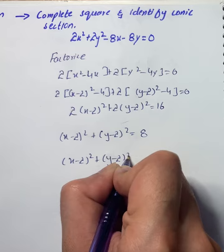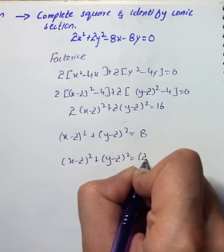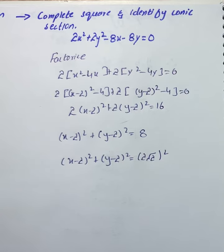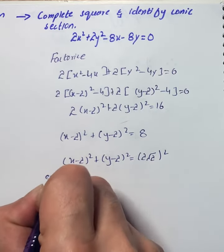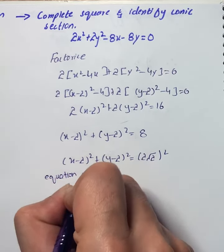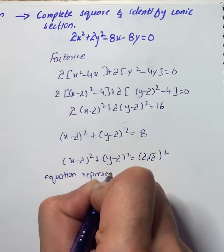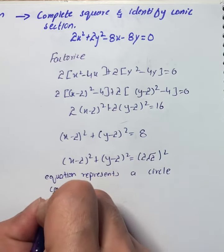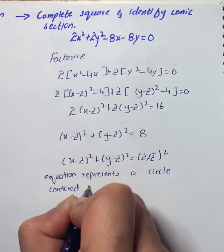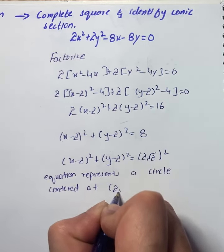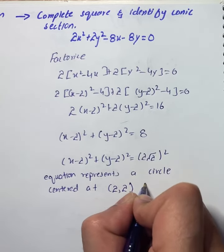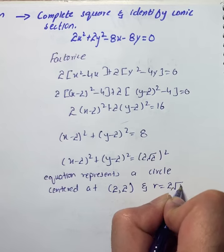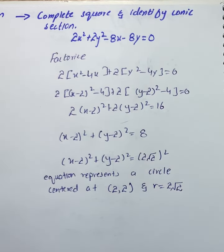We will take (x - 2)² + (y - 2)² = (2√2)². So the equation represents a circle centered at (2, 2) and radius equals to 2√2. That is our solution for the given question.